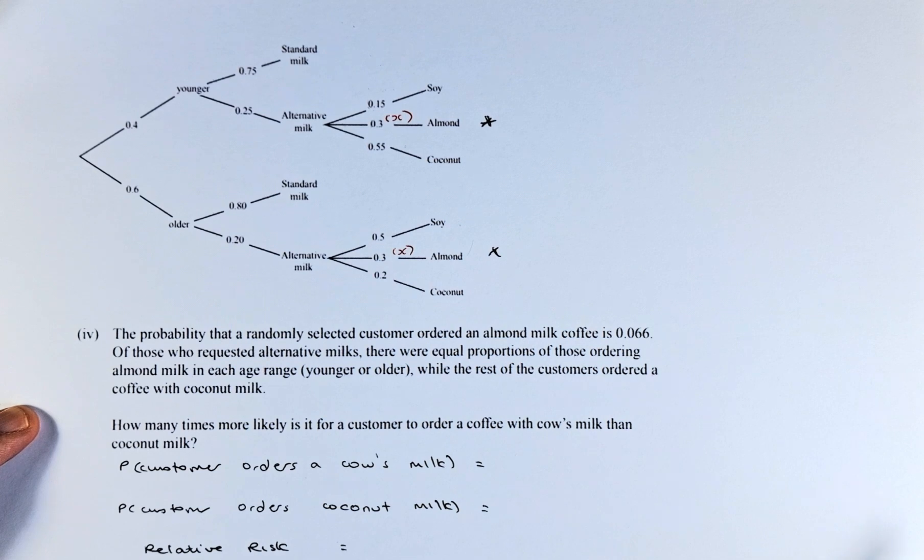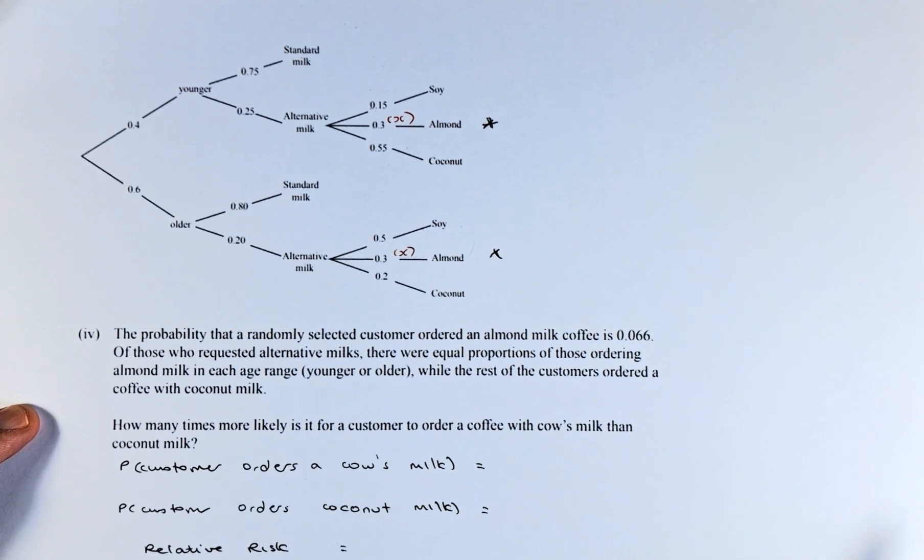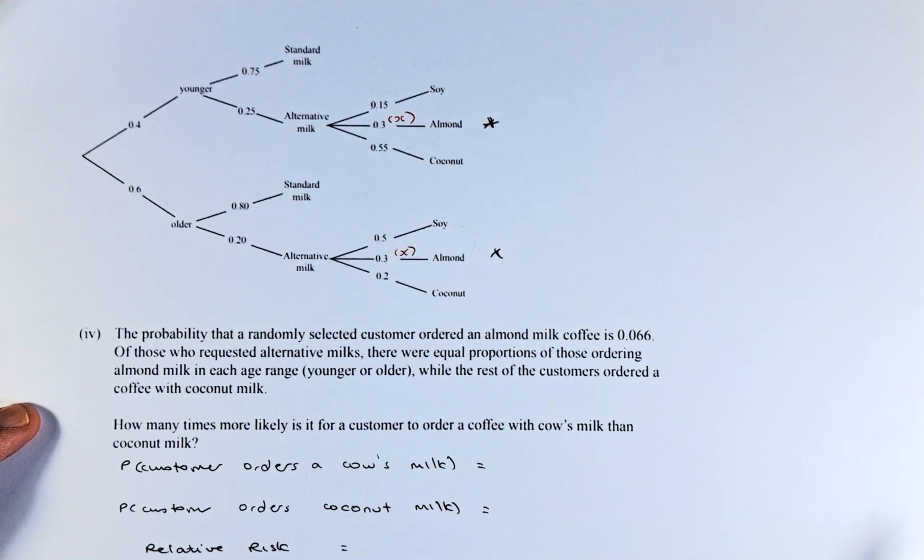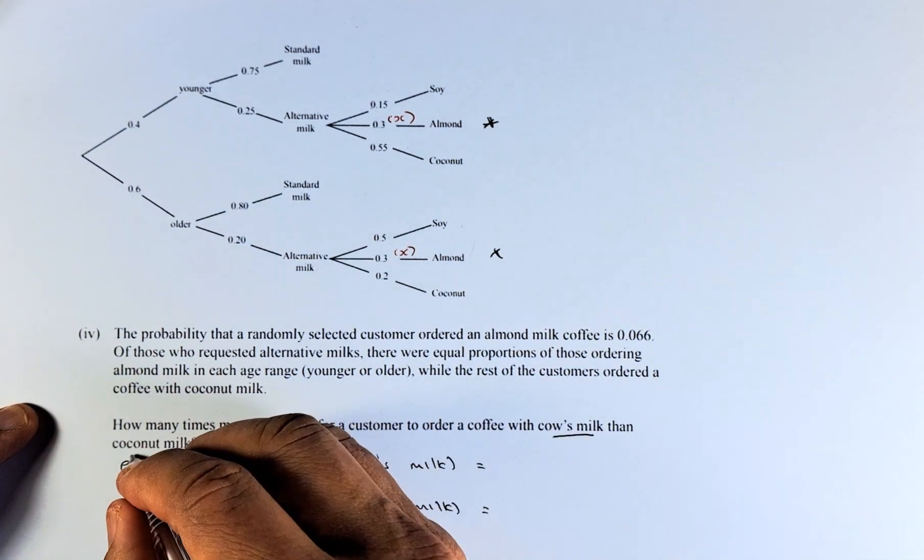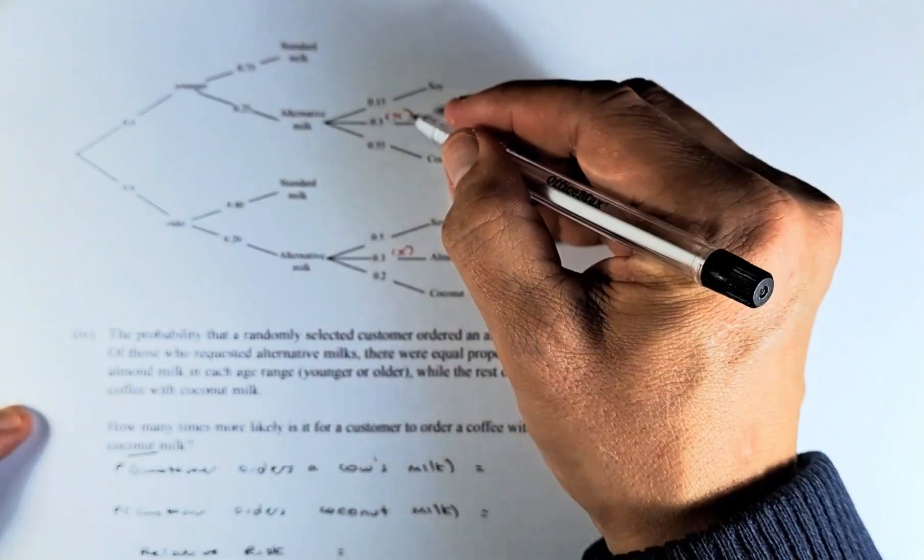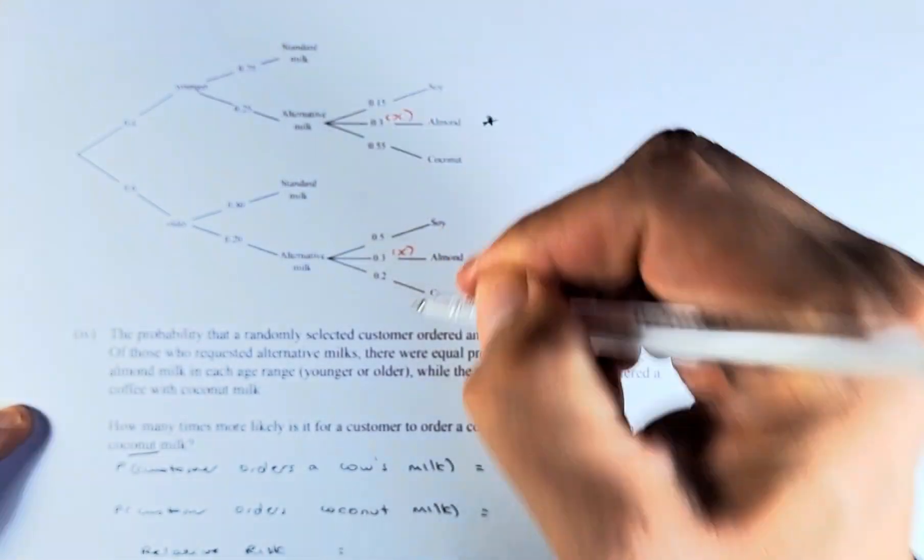a coffee with coconut milk. The question is, how many times more likely is it for a customer to order a coffee with cow's milk or standard milk than coconut milk? So first we need to calculate the probability of almond and then we can calculate the coconut milk.